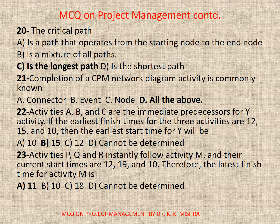Question 22: Activities A, B and C are the immediate predecessors for activity Y. If the earliest finish times for the three activities are 12, 15 and 10 respectively, then the earliest start time for Y will be — Options: A. 10; B. 15; C. 12; D. Cannot be determined. Correct option is B: 15. Because an activity can be started only when all its predecessors have been completed.